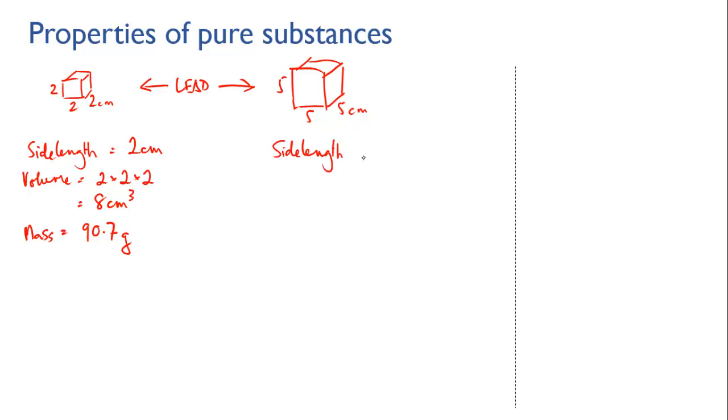That means its volume is five times five times five, which equals 125 cubic centimeters. And imagine that we weigh this block and we find that its mass is 1,418 grams. That's 1.418 kilos.